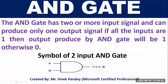What is an AND gate? The AND gate has two or more input signals and can produce only one output signal. If all the inputs are one, then the output produced by the AND gate will be one; otherwise zero.